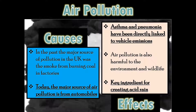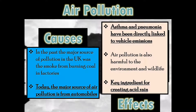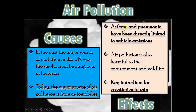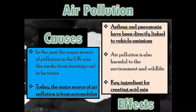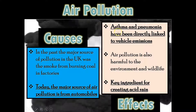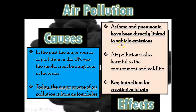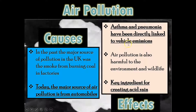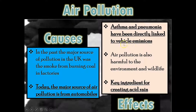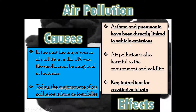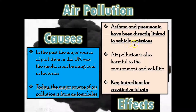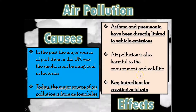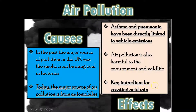As for the effects we have to deal with as humans — particularly children — asthma is a major one. Both my daughters had asthma; my youngest had it really bad and had to use an inhaler all the time. Asthma has been directly linked to vehicle emissions — meaning gasoline, oil, and petroleum that we burn in our cars. Air pollution is also a key ingredient for acid rain, which we'll be looking at next.